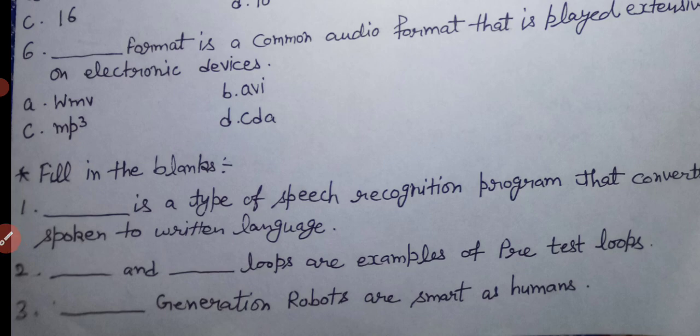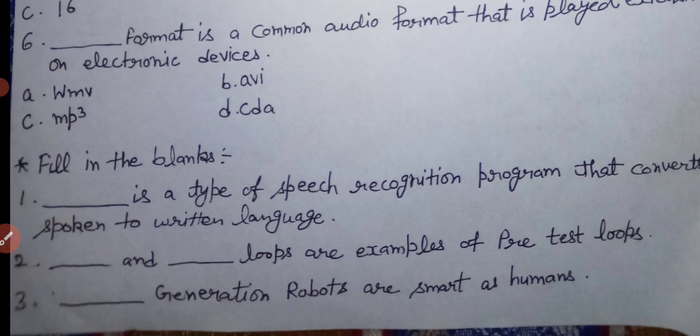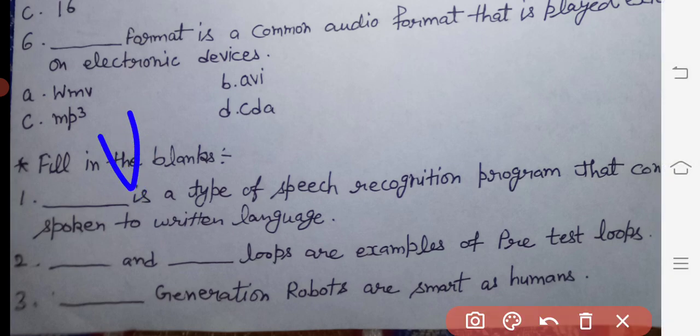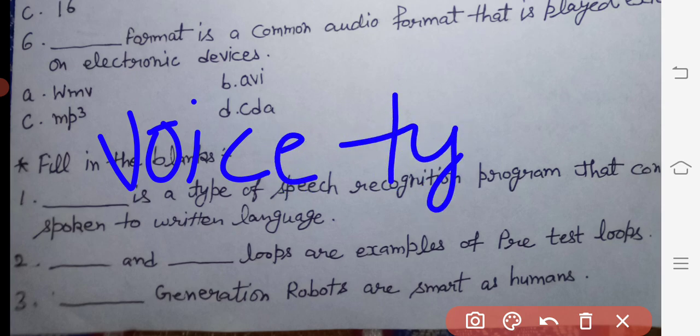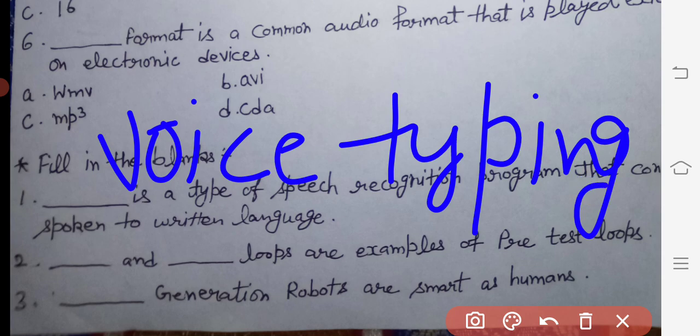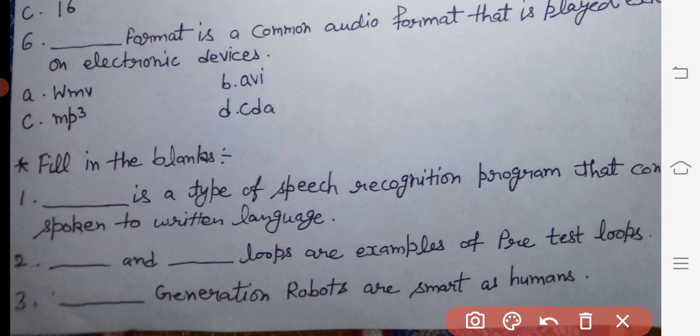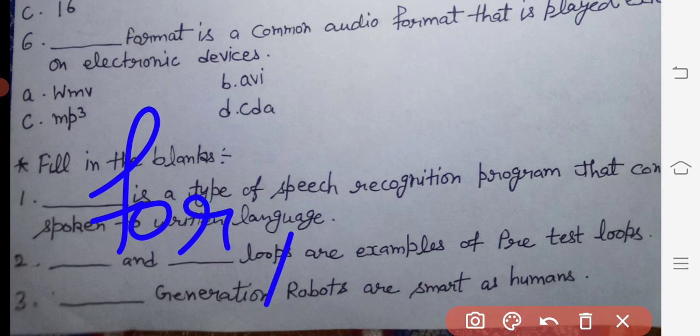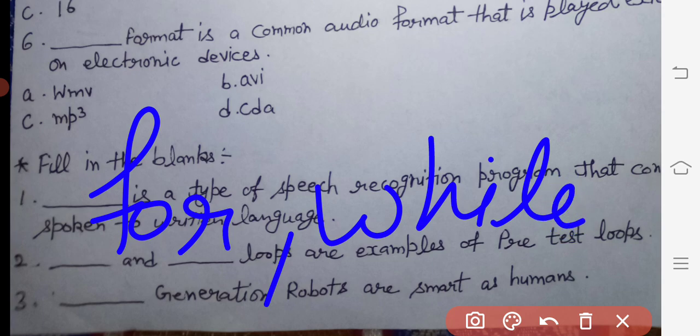Fill in the blanks. First: dash is a type of speech recognition program that converts spoken to written language. The answer is voice typing. Second: dash and dash loops are examples of pre-test loops. The answer is for and while. For and while loops are examples of pre-test loops.